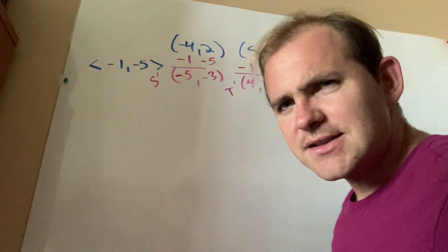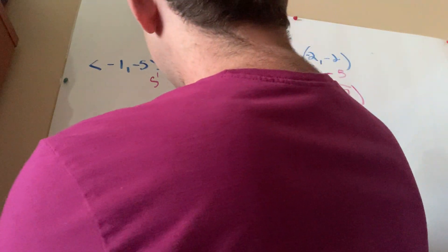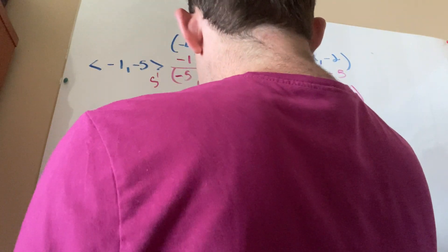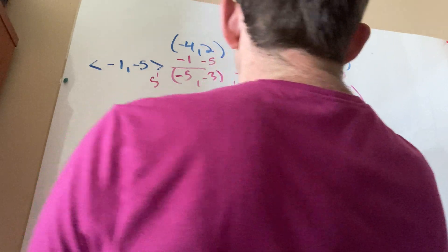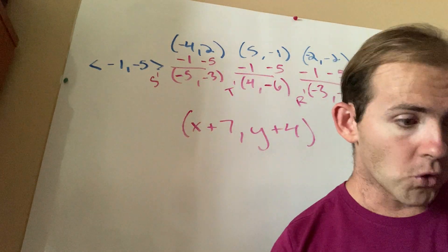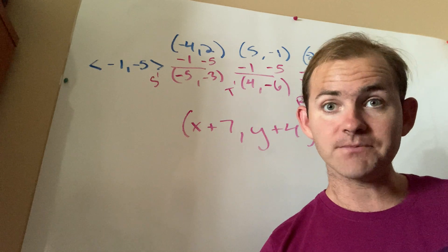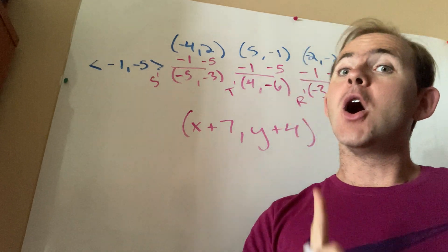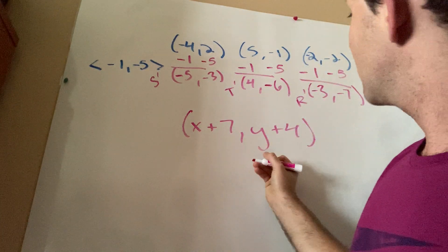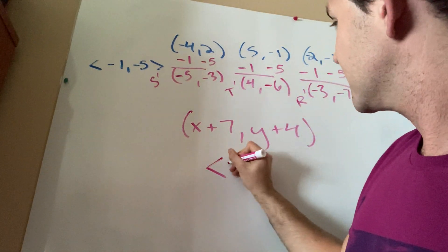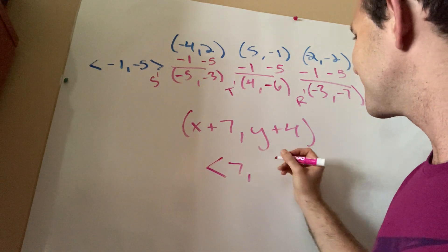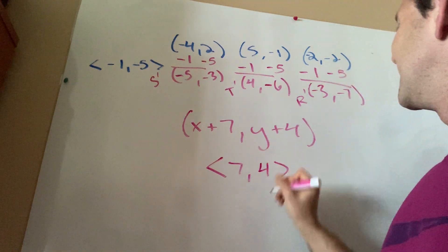So seven units to the right, four units up. I can write that either as x plus 7 and y plus 4. So that's the coordinate rule, or we can say the coordinate notation. You might hear me refer to it as the algebraic notation. Or if I want to represent it as a vector, I can just write the numbers in between those two kind of like sideways v's: 7, 4.